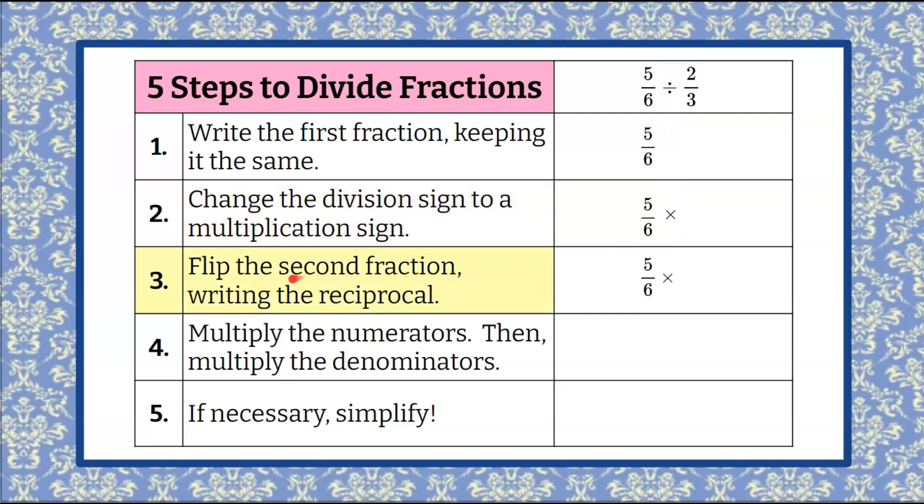Step three says we're going to flip the second fraction and by doing this we're writing the reciprocal. So you can see that in step three I've brought down what I had in step two. Now let's go to the second fraction which is 2/3 and we're going to write the reciprocal, which means we're going to flip the numerator and denominator. So flipping it makes it 3 over 2 and we've written that down.